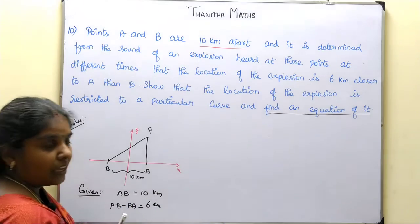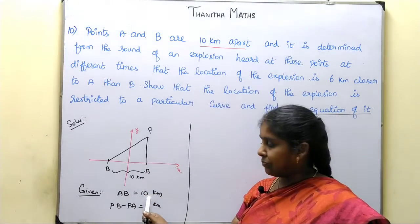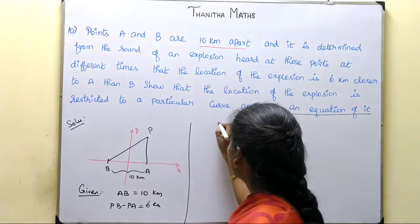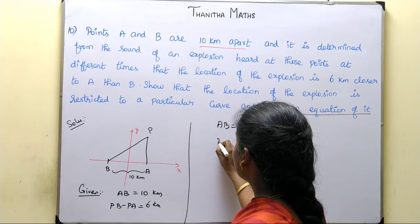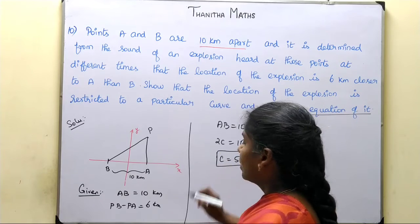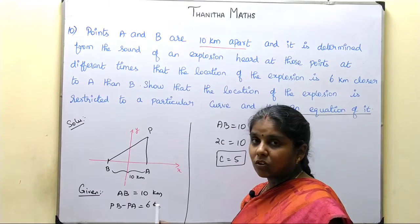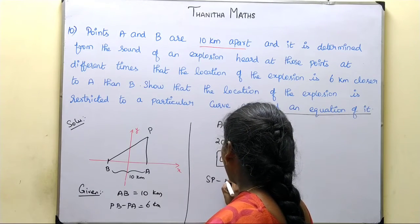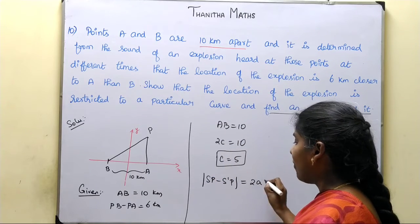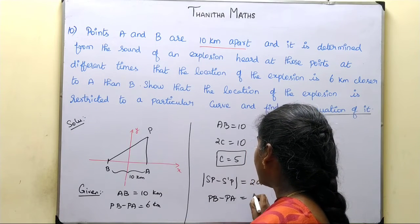This is the given condition. PB minus PA equals 6, and that equals 2a. So 2a equals 6, therefore a equals 3. The equation of this curve comes from the condition that PB minus PA equals 6, confirming the hyperbola setup.